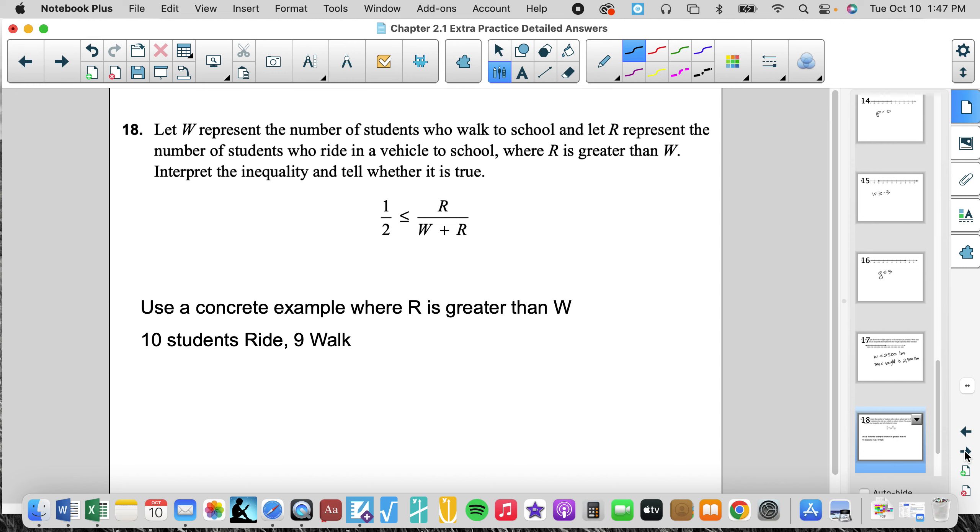Let W represent the number of students who walk to school and R represent the number of students who ride in a vehicle to school, where R is greater than W. So we have more kids riding a vehicle than walking, more kids riding than walking. So if we know R is going to be more than W, let's do an example. R is 10, that means walkers have to be less than 10, so it's going to be 9. So if we have that, 1/2. So R is 10 over 19, so that's going to be more than half.